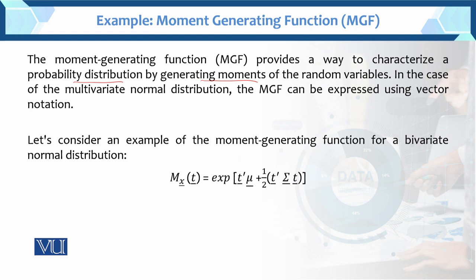Basically, the moment generating function characterizes the probability distribution by generating moments of the random variable. In the case of the multivariate normal distribution, the MGF can be expressed using the mean vector. We previously derived this mathematically. Now let's consider an example of the moment generating function for a bivariate normal distribution.